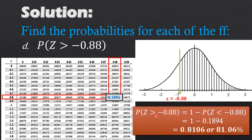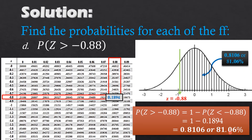Since we need the area to the right, we use the complement: P(z greater than negative 0.88) equals 1 minus P(z less than negative 0.88). That is 1 minus 0.1894, which equals 0.8106, or 81.06 percent.